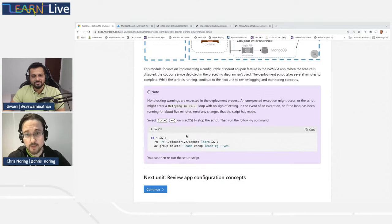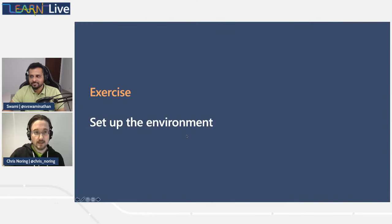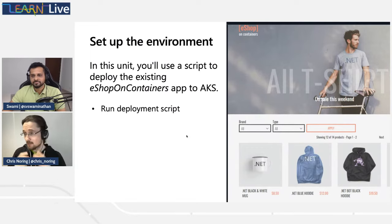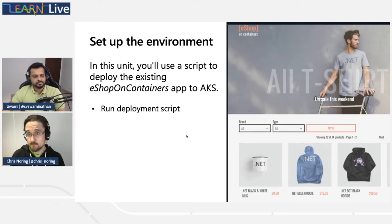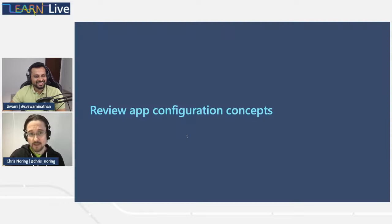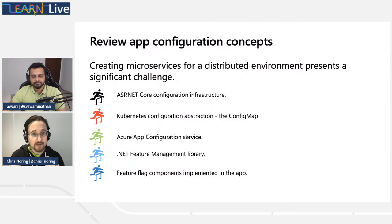Back to PowerPoint. Quick recap: we've run a deployment script, waited 10 minutes, saw the code deployed, and the front end storefront is running. We will now review the app configuration concept, looking at ASP.NET configuration infrastructure, Kubernetes configuration abstraction and config maps, Azure App Configuration service, the .NET feature management library, and implementation of feature flags on both the Angular client and ASP.NET Core backend.